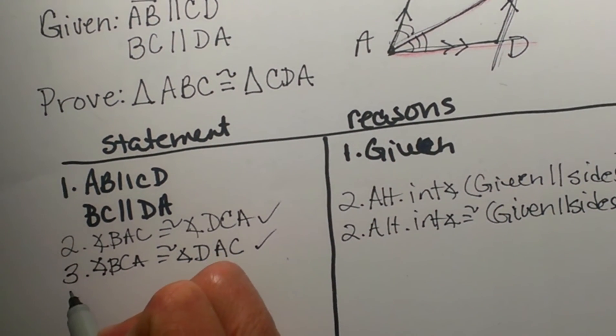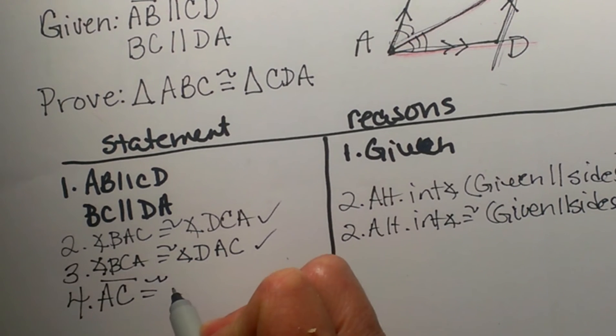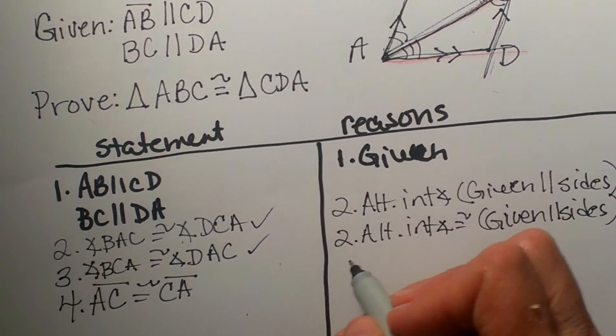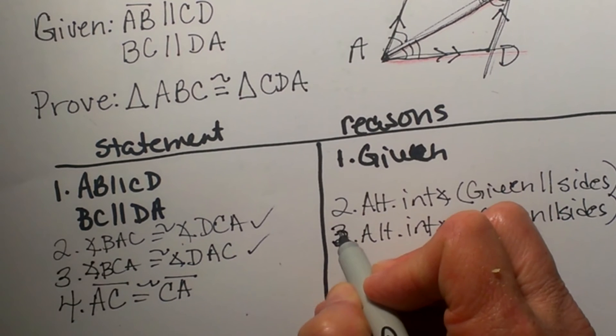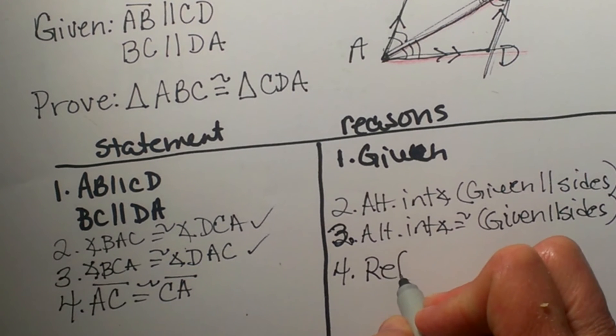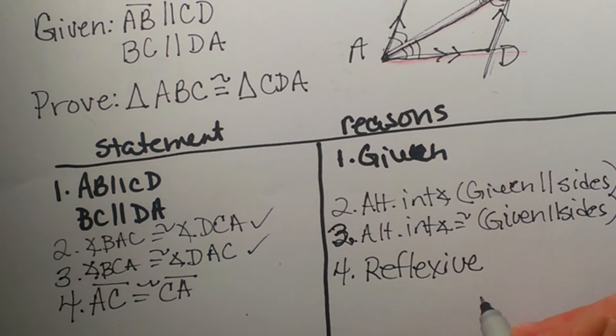So I am going to go down here and I am going to write AC is congruent to CA. It is congruent this way and this way. They are congruent to each other because that is a reflexive property. We know anything is congruent to itself. So that is the reflexive property of congruency.